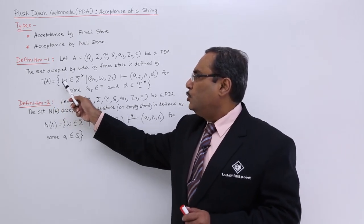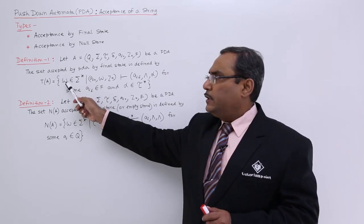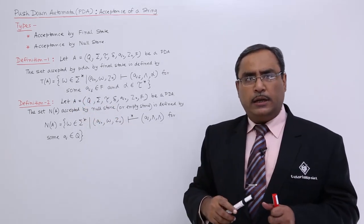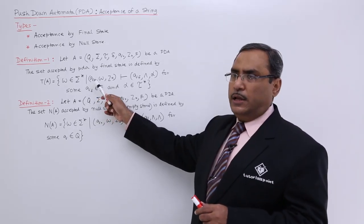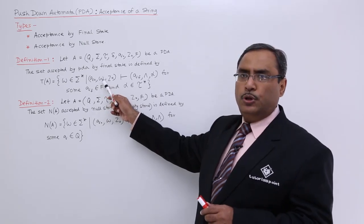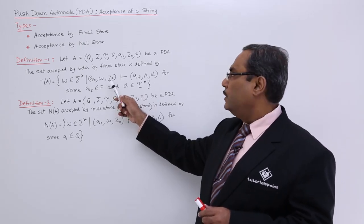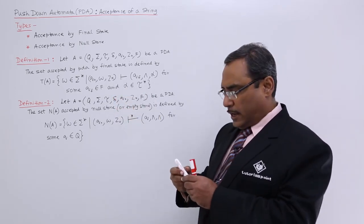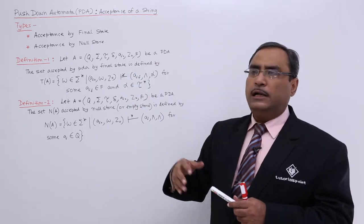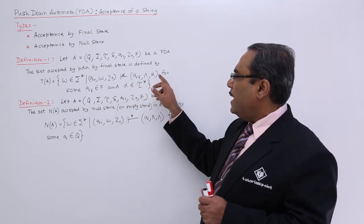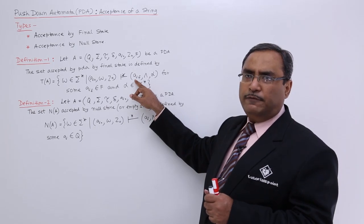T(A) equals the set which accepts W, where W is the string getting accepted which belongs to Σ*. W consists of input alphabets. Q₀, the initial state, after application of W, and Z₀ is the stack top symbol. Z₀ will produce - I can put star here, meaning not a single transition but after multiple transitions - it will have QF, the final state.